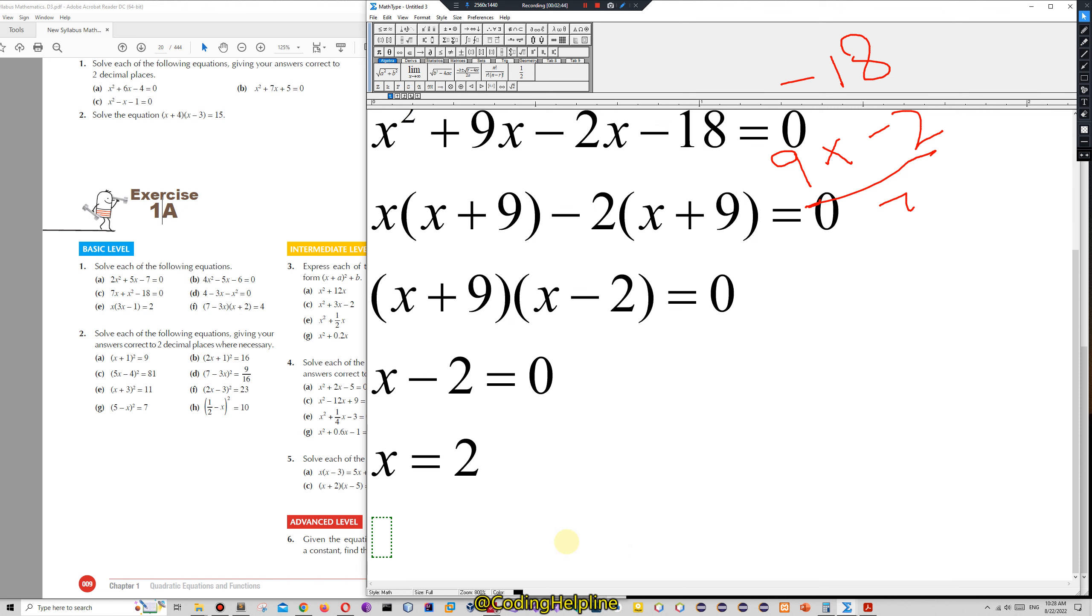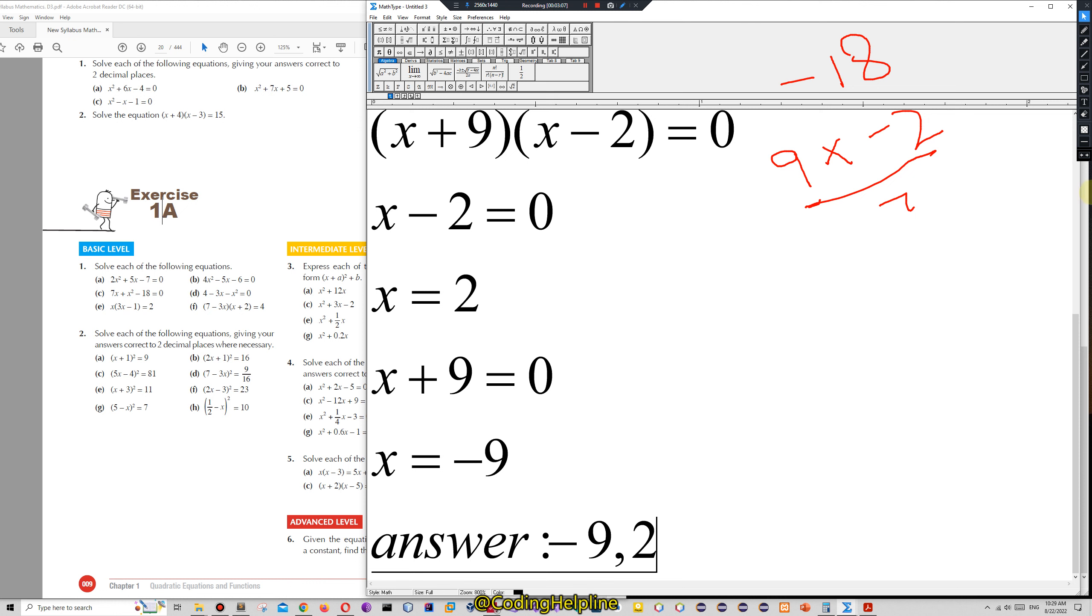This is the first root. Then we can eliminate this one to get this term. So we compute the second root of the quadratic equation. x plus 9 is equal to 0, and we shift 9 to the right. It becomes minus 9.